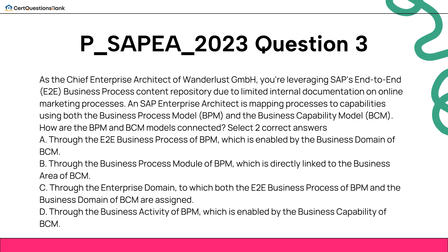As the Chief Enterprise Architect of Wanderlust GmbH, you're leveraging SAP's end-to-end E2E Business Process Content Repository due to limited internal documentation on online marketing processes. An SAP Enterprise Architect is mapping processes to capabilities using both the Business Process Model (BPM) and the Business Capability Model (BCM). How are the BPM and BCM models connected?